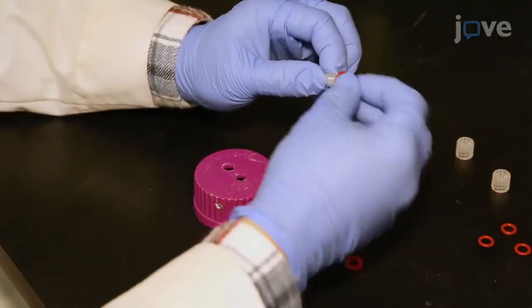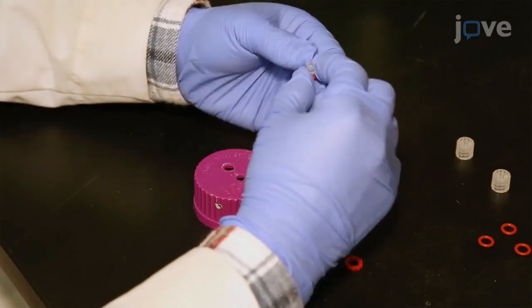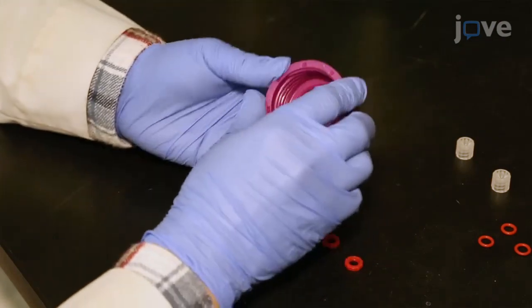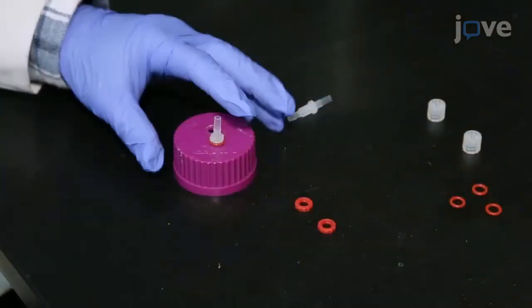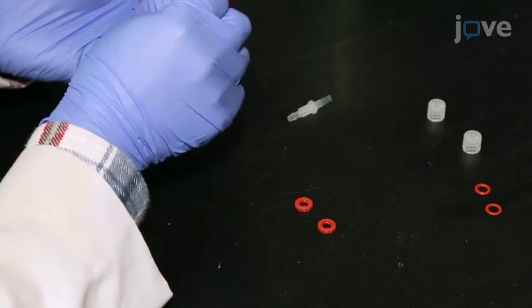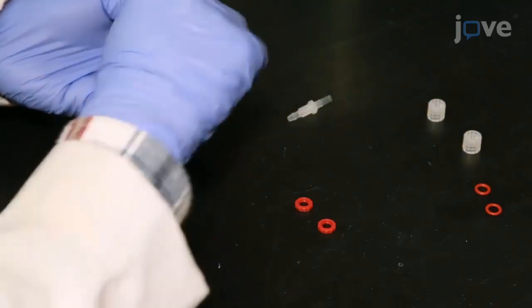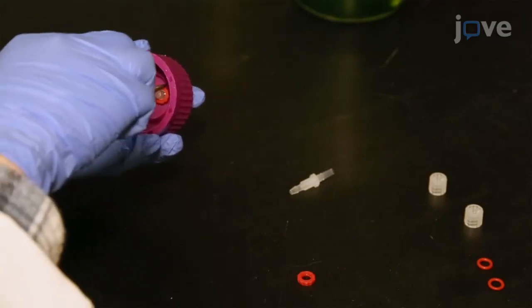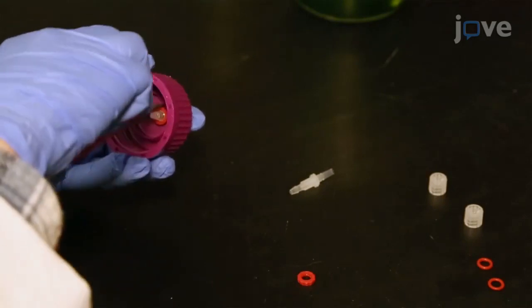Slip a 1.25-inch O-ring over the threads of a 1.8-inch panel mount lure fitting and slide this into the 1.25-inch hole drilled in the lid. Slip a second 1.25-inch O-ring over the threads so that the lid is sandwiched between the two O-rings. Then slip a lock nut onto the threads and tighten it to fix the panel mount lure in place.